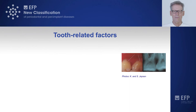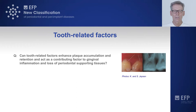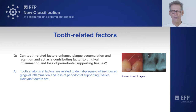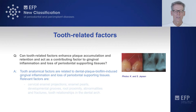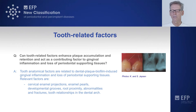Tooth-related factors enhance plaque accumulation and retention and act as contributing factors to gingival inflammation and loss of periodontal supporting tissues. Tooth anatomical factors are related to dental plaque biofilm and gingival inflammation and loss of periodontal tissues. Relevant tooth-related factors include cervical enamel projections — as seen in the clinical slide, even detectable on radiographs — enamel pearls, developmental grooves, root proximity, abnormalities and fractures.